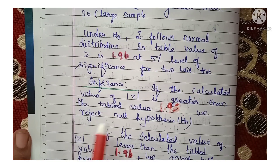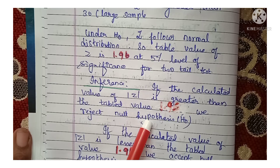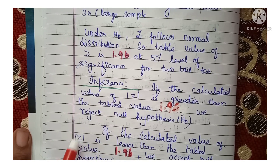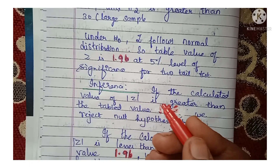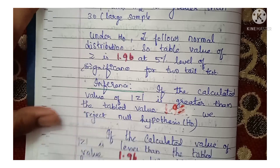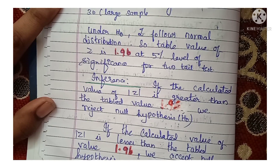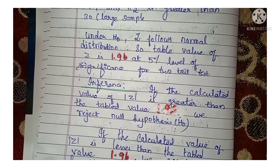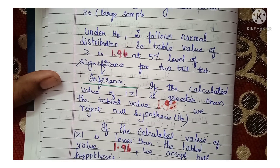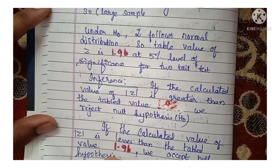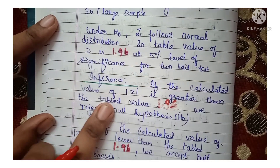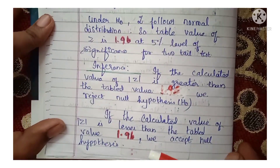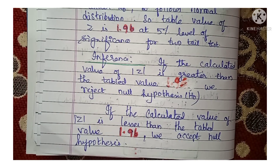The inference for the two-group test: if the calculated value of |Z| is less than the table value of 1.96, we accept the null hypothesis. If the calculated value of |Z| is greater than the table value of 1.96, we reject the null hypothesis. Remember, even if the Z value is negative — for example minus 2.96 — you convert it to plus 2.96 by taking the modulus. This topic is worth 5 marks.